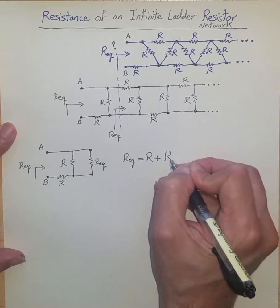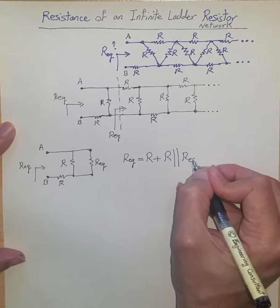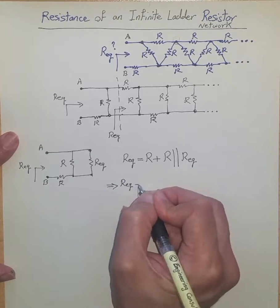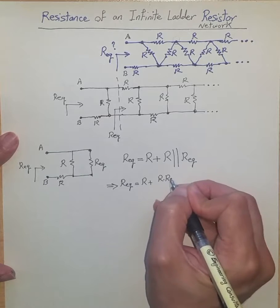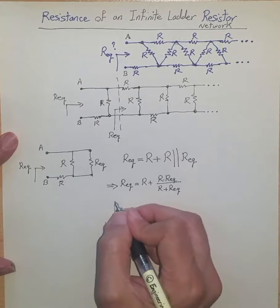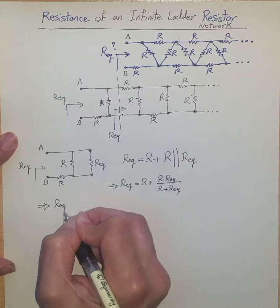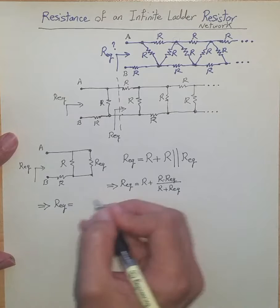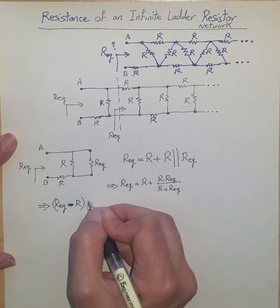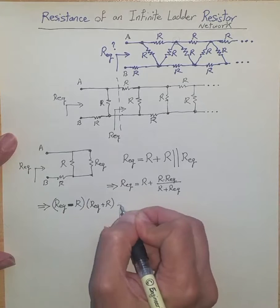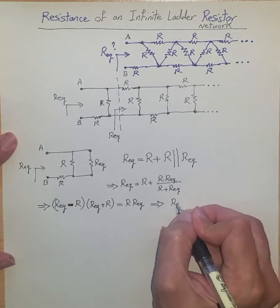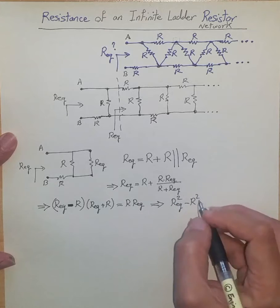I can simply say: R equivalent is equal to this resistor in series with these two in parallel. So it's R plus this R in parallel with the equivalent resistance I want to find. The equivalent resistance is R plus R times R_eq divided by R plus R_eq. From here, moving terms to the other side gives R_eq minus R, and multiplying both sides by R plus R_eq gives R times R_eq.